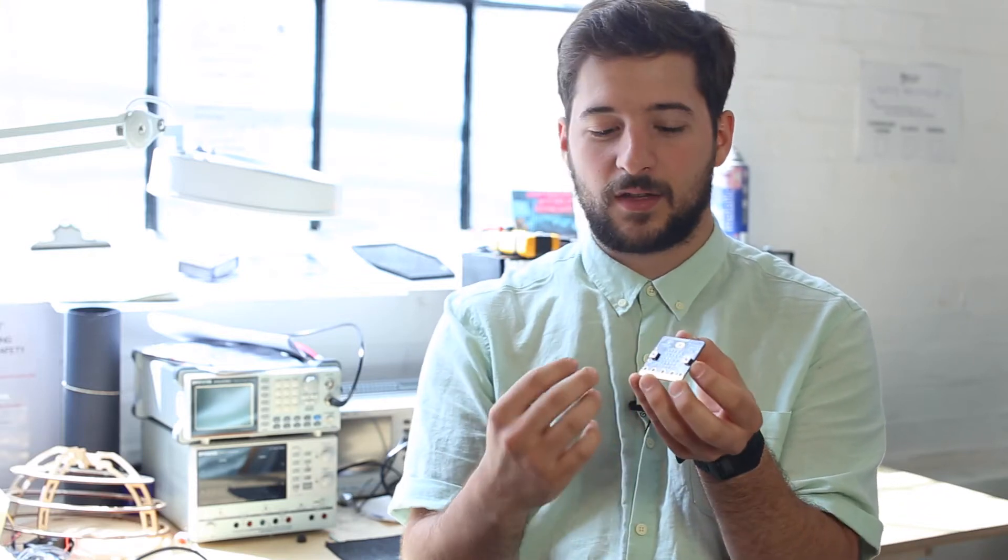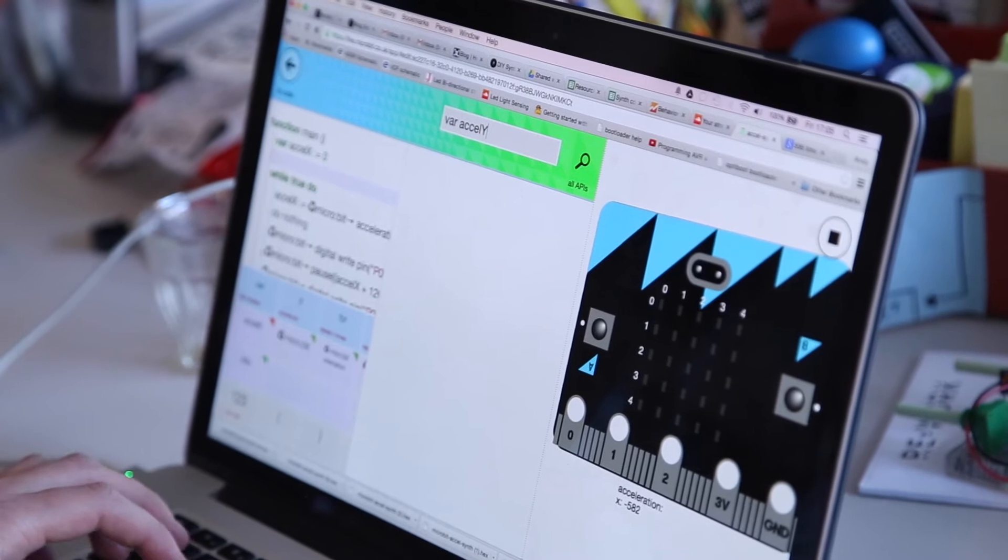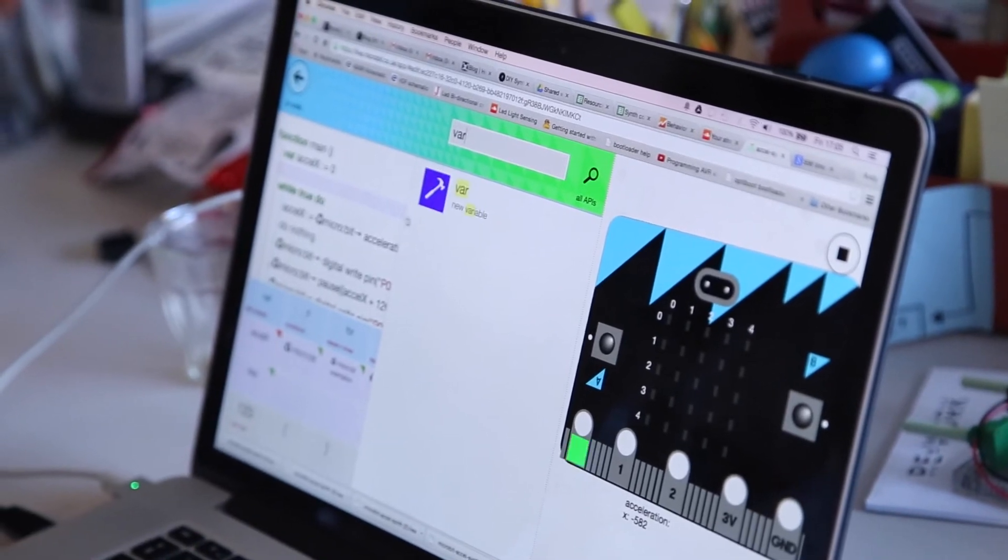You can notice that on the front it's really clean and you have the LEDs, you have the buttons, and you have the crocodile clips. That's what we call the project side.